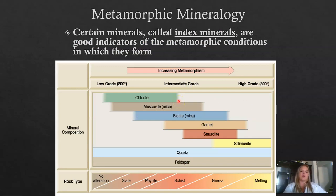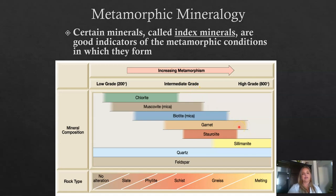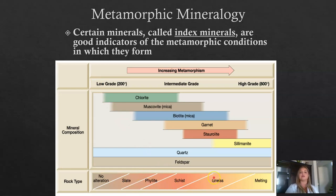Metamorphic minerals form during the metamorphic process, and certain minerals only form under certain pressure and temperature conditions — they tell us how a rock formed. Quartz and feldspar form across low to high grade, but minerals like garnet only form in an intermediate to high grade range. With increasing metamorphism toward higher grade, you eventually reach melting and the rock becomes igneous. The four foliated metamorphic rocks in increasing grade are slate, phyllite, schist, and gneiss.